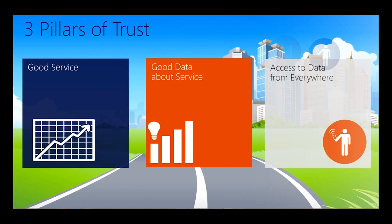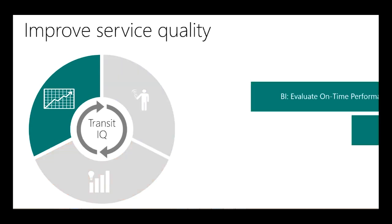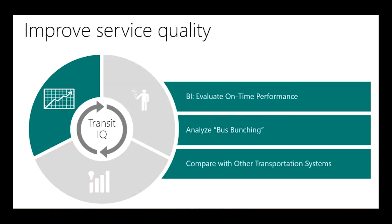In brief, service quality means evaluating on-time performance using business intelligence tools like graphs and charts, and doing root cause analysis. Analyzing bus bunching is a big issue for cities today when buses clump together on a route — we've heard this is actually one of the worst problems in public transit today. And the ability to compare with other transportation systems matters, because there are things you cannot fix. You cannot fix traffic or construction, but you should be able to answer: is my performance better or worse than the national average?